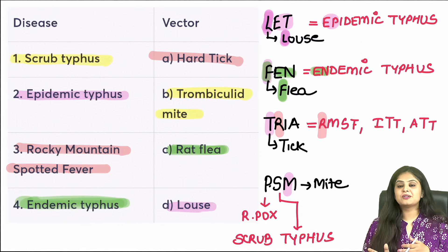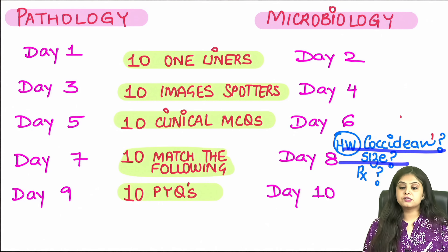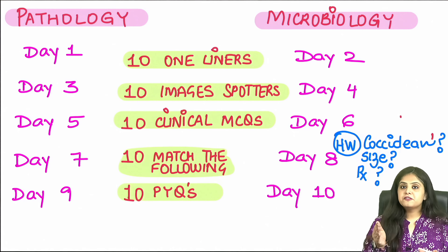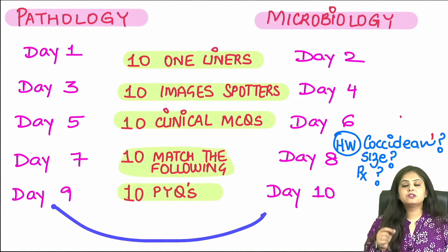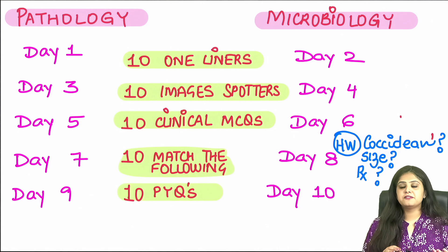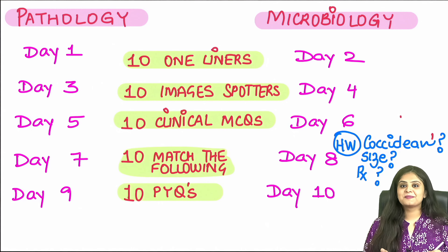With that we wrap up today's match the following — rather quick but we finished 10 questions. The homework: the coccidian parasite image with an oval-shaped oocyst — tell me the name of the organism, size of the oocyst, and the treatment. The next two days will wrap up this series with 10–12 quick previous year questions. The first exam coming up is FMGE, so I will be putting up FMGE questions, which will also be good revision for NEET PG students. Keep studying, and I am waiting for the homework answers.